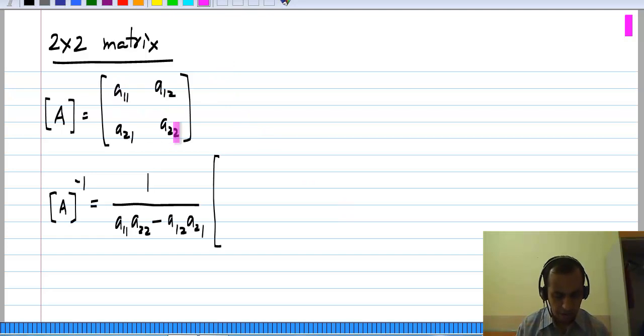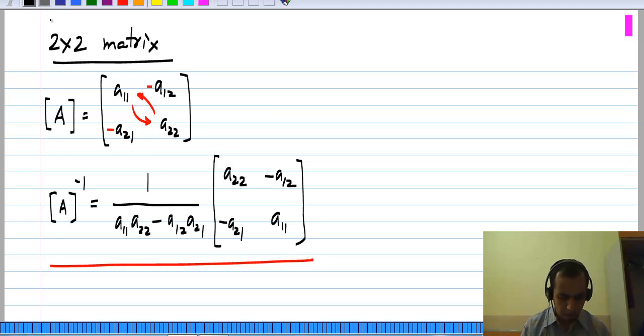So all you have to do is swap the diagonal elements, that is A22 comes over here and A11 goes over there. So you simply interchange the positions of these two and for the other two you retain the positions, but negate the values. So here and here you have minus and minus, that is all.